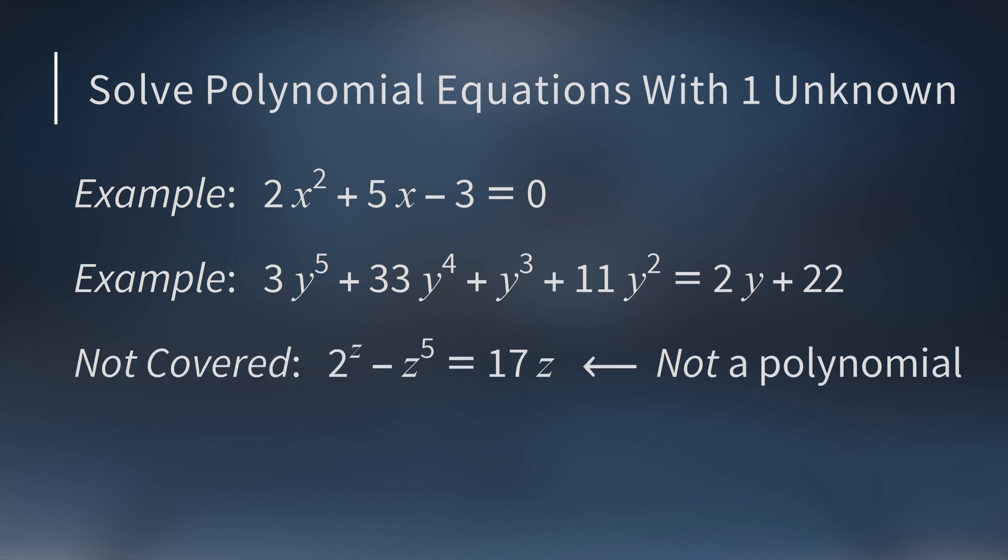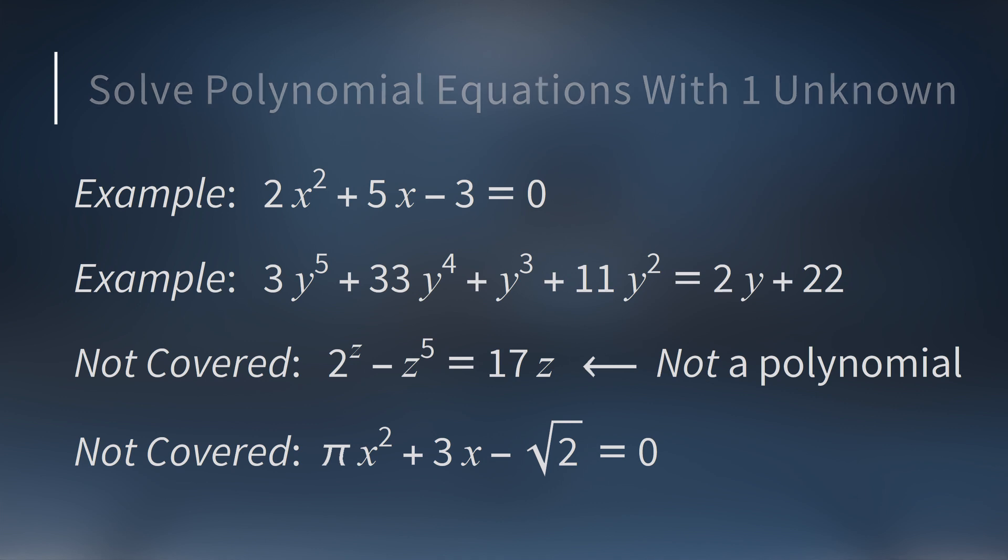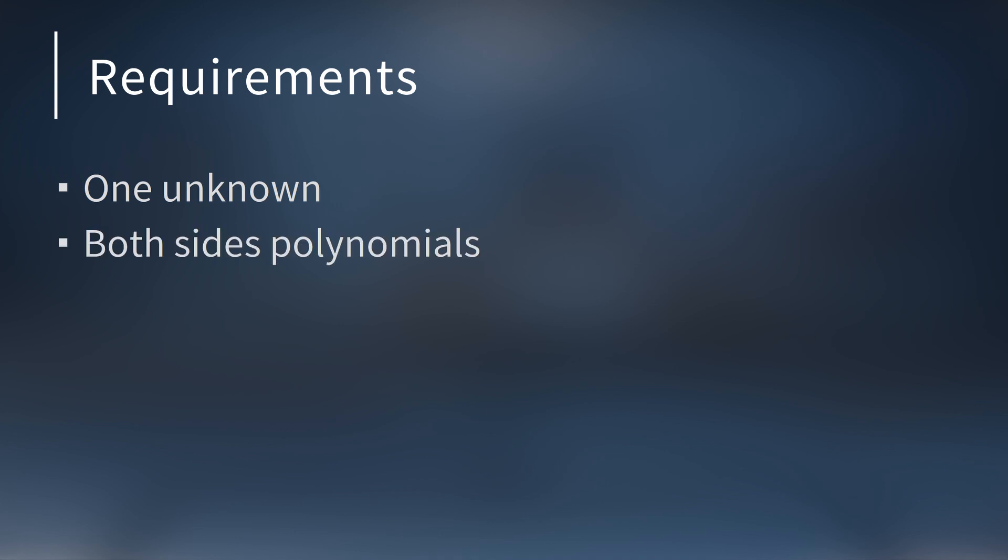But we will not look at equations like 2 to the z minus z to the 5th equals 17z, since the left-hand side is not a polynomial. This is because the first term has a variable as the exponent. Also, we won't consider polynomials with non-integer coefficients. We're going to focus on Diophantine equations with one unknown where both sides are polynomials and all the coefficients are integers.